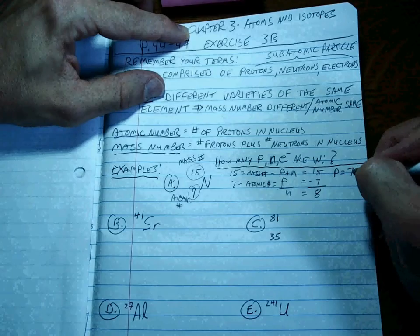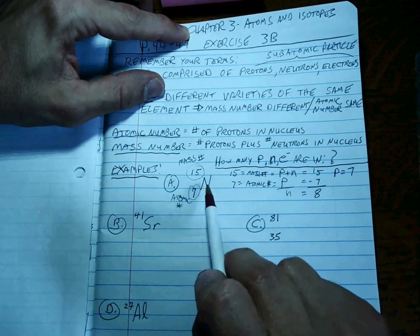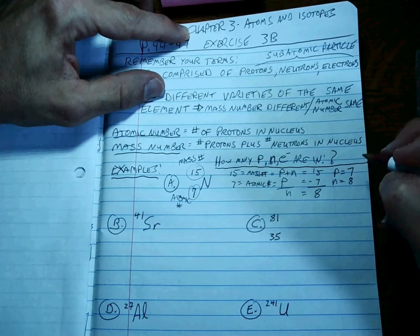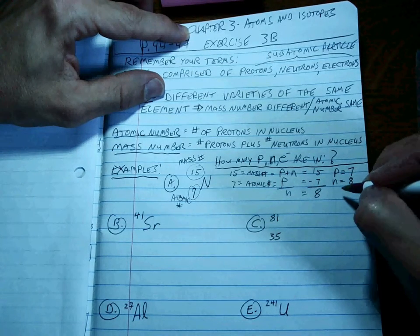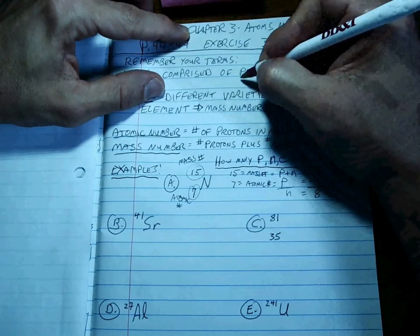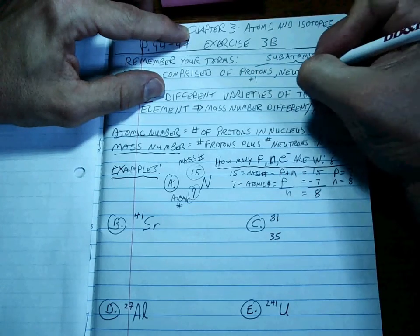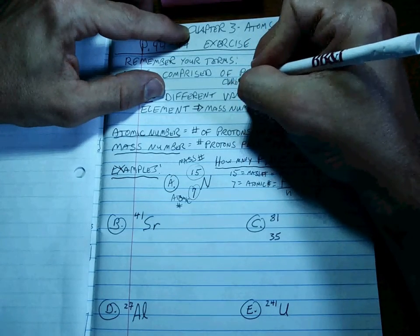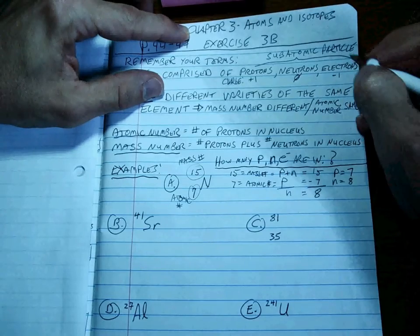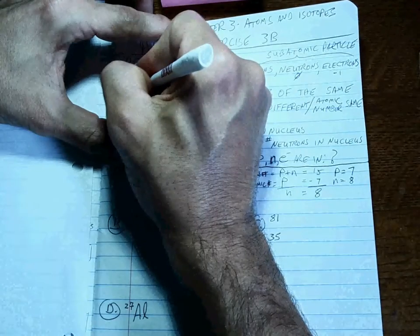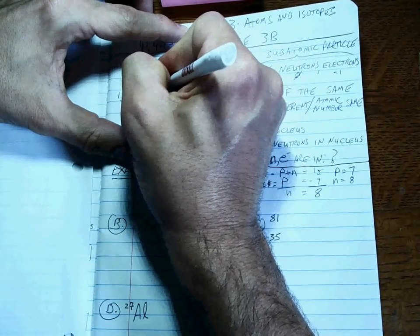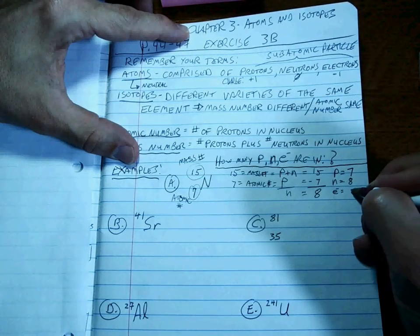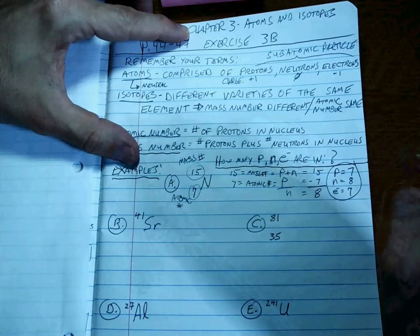Alright? So, protons are seven because it's the elemental symbol nitrogen, and the atomic number is seven. Neutrons are eight, and since this is a neutral atom, you know that protons have a plus one charge. Neutrons have a neutral charge. Electrons have a minus one charge. For an atom to be neutral, we have to have the same number of electrons as protons.